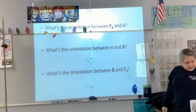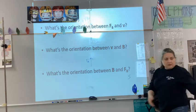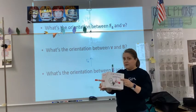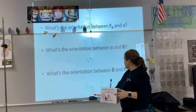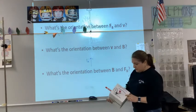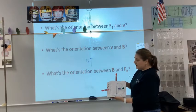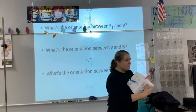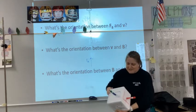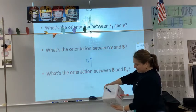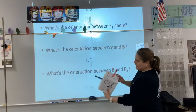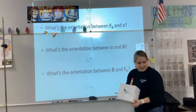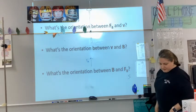It asks what is the orientation between the force and the velocity — those are perpendicular. The orientation between the velocity and the magnetic field is also perpendicular, and the orientation between the magnetic field and the force is also perpendicular. The red is the force and the blue is the magnetic field — perpendicular, perpendicular, perpendicular.